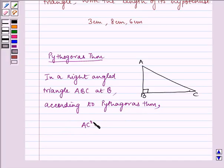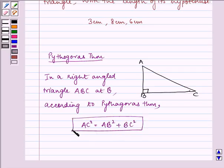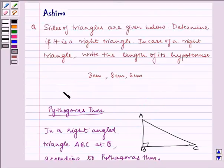AC square, that is hypotenuse square, is equal to sum of the squares of other two sides, that is AB square plus BC square. Now this is the key idea to our question.